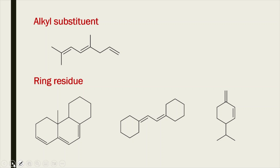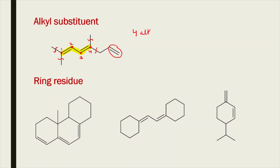For alkyl substituents, consider the conjugated system with four carbon atoms. We look at the substitutions on all four carbon atoms. On the first carbon there is one methyl group, and another methyl group. There is no substitution on the second or third carbon. On the fourth carbon, there is one methyl and one additional group. The isolated double bond is not part of the conjugation. So we have four alkyl substituents in total for this conjugated system.